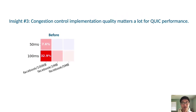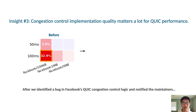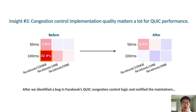Congestion control quality matters a lot for QUIC performance. In our study, we identified a bug in Facebook's congestion control logic, which was the root cause for Facebook's poor QUIC performance during 100ms added delay. Before we identified this bug, QUIC was 33% slower than TCP for Facebook's 100KB endpoint during a 100ms added delay. After a patch was deployed to fix this bug, we again benchmarked Facebook's single object endpoints and measured a significant improvement in QUIC performance. Thus, through our study, we showed that even for large content providers like Facebook, congestion control quality plays a large role in determining QUIC's relative performance compared to TCP.